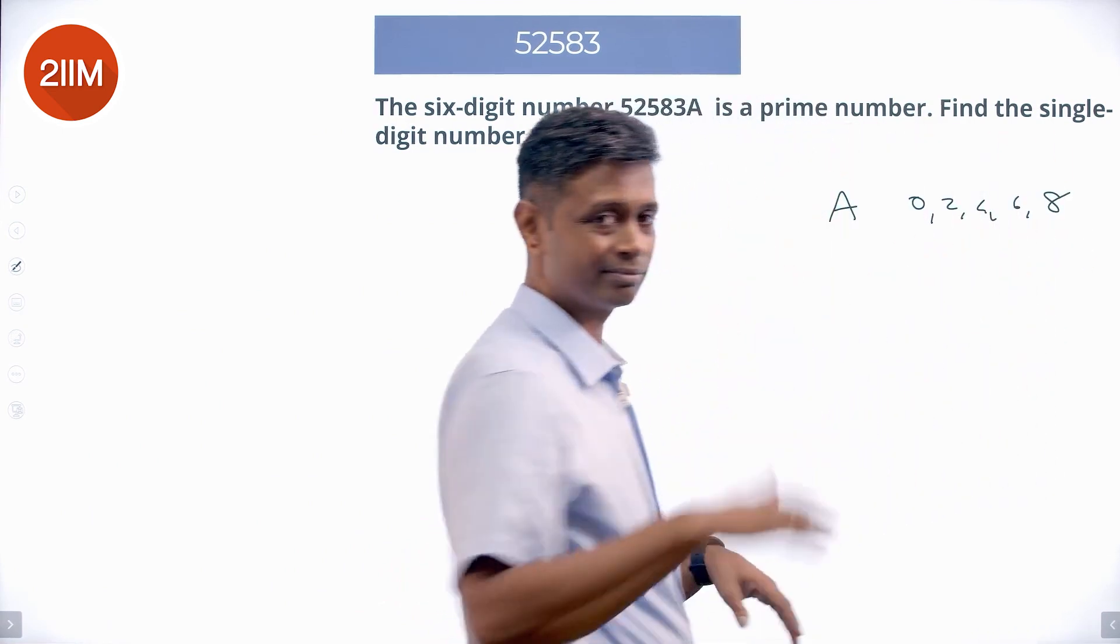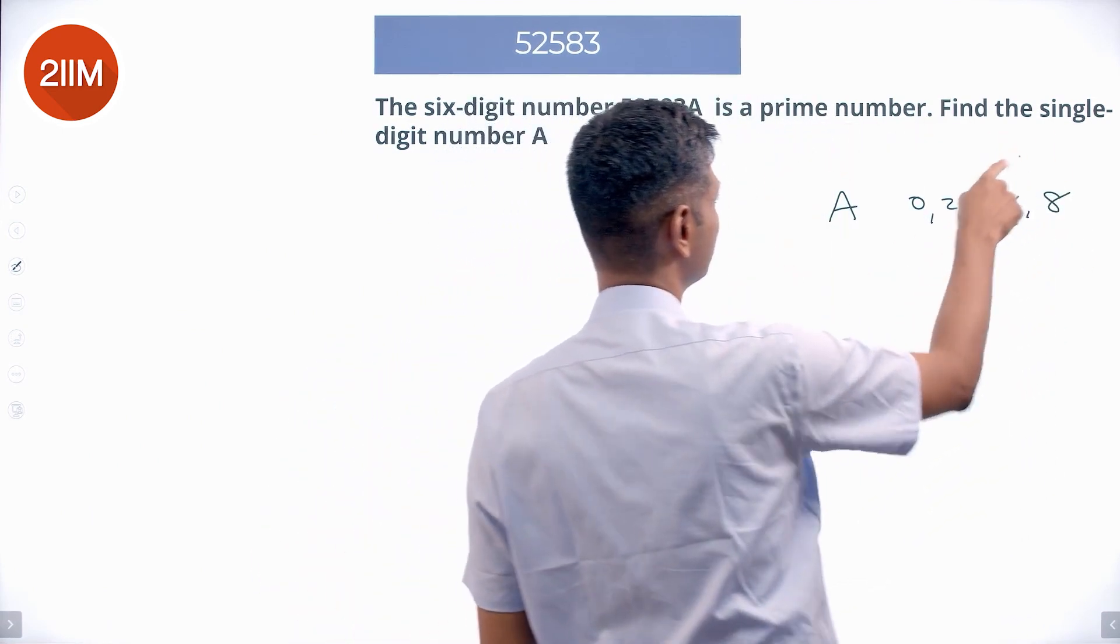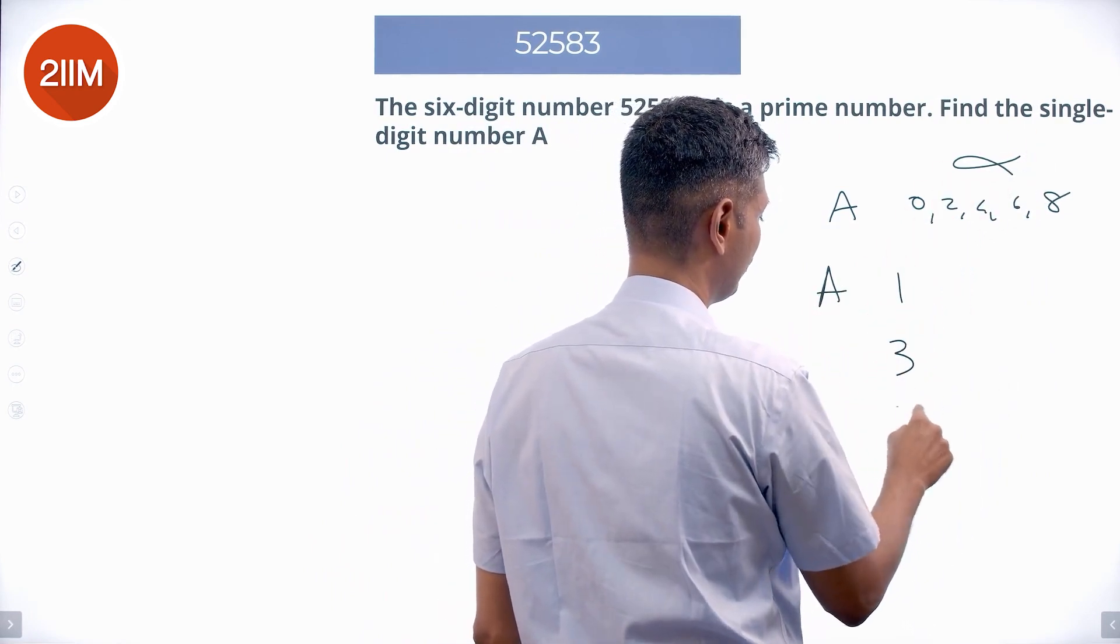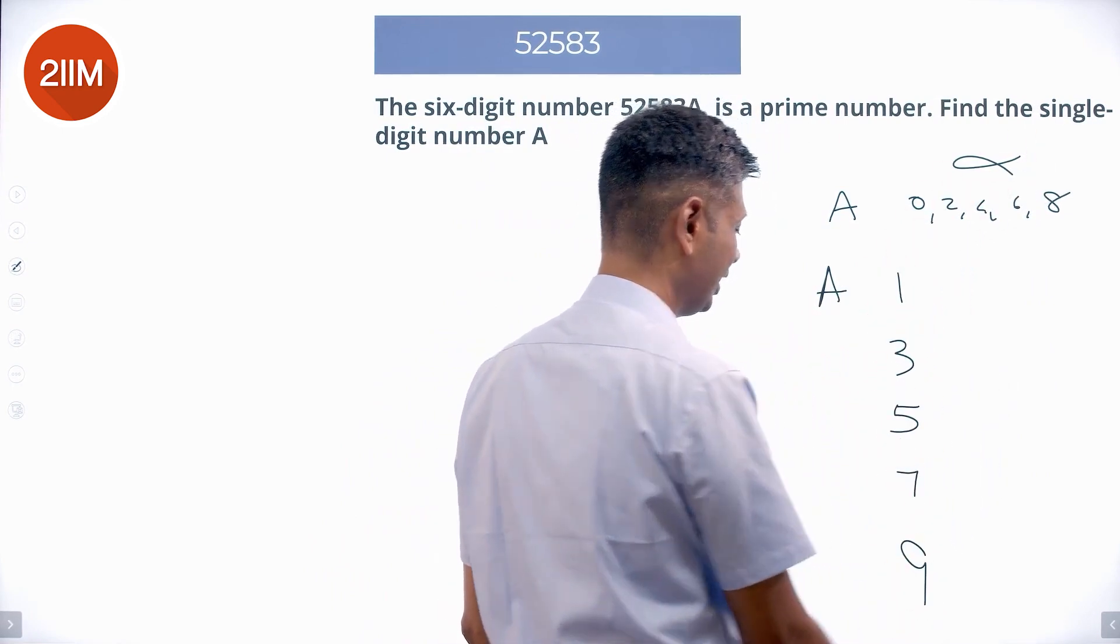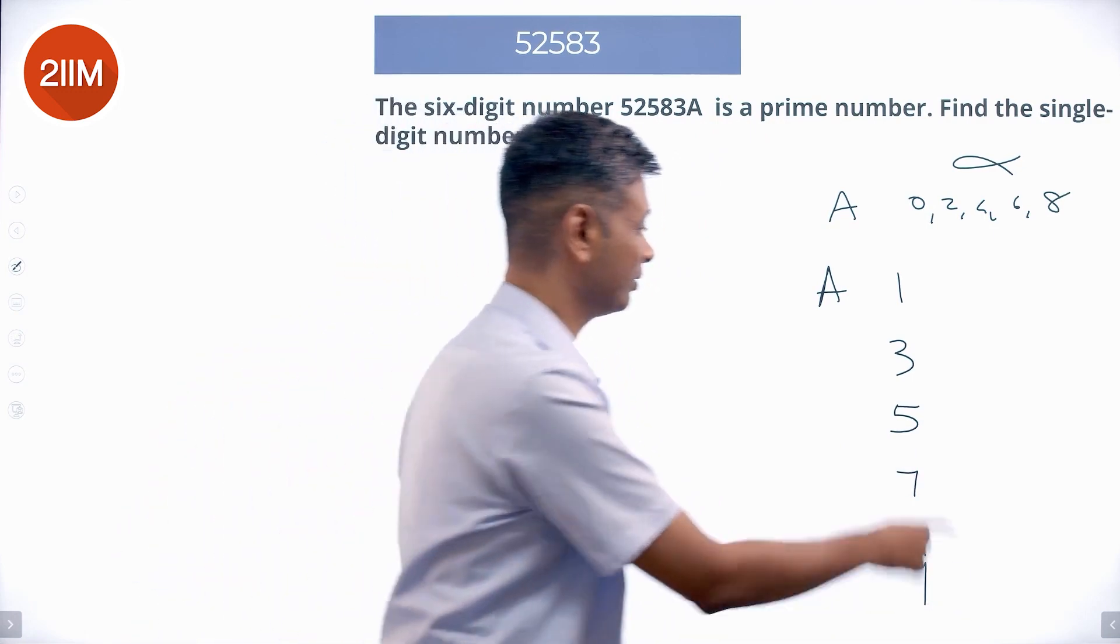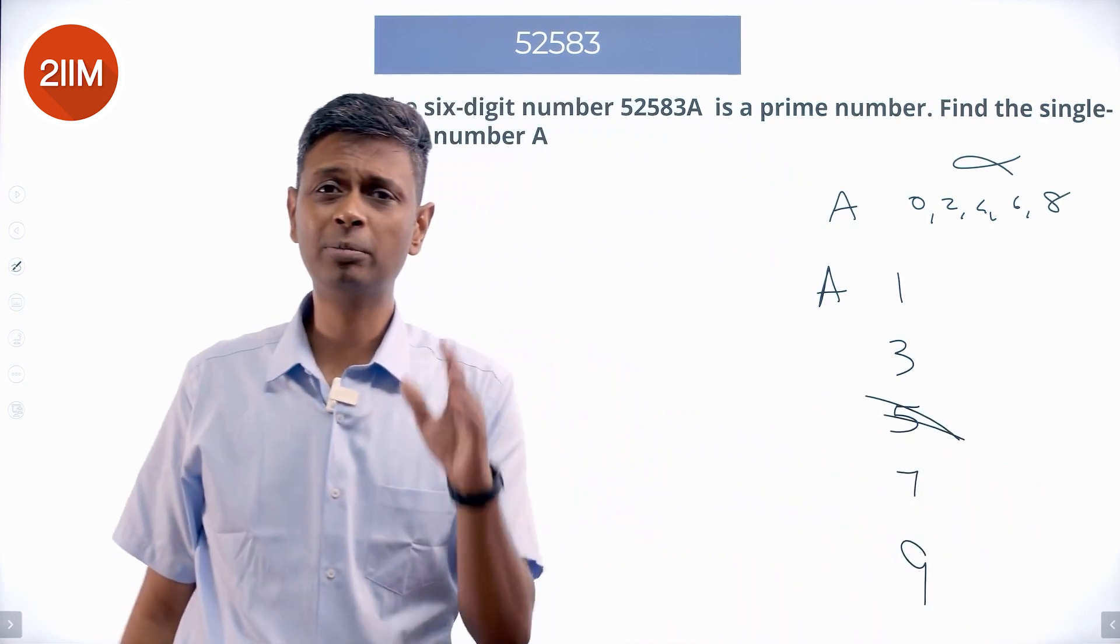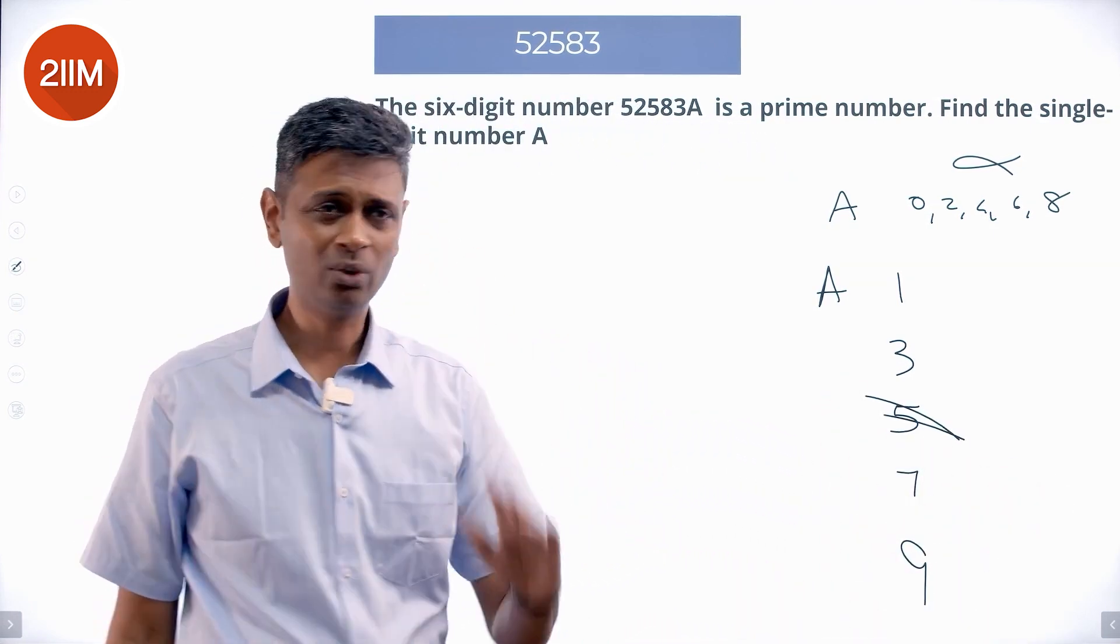Not possible. All of these are out. A can only be 1, 3, 5, 7, or 9. The moment I write this, I know it cannot be 5. Why? Then it will become a multiple of 5.